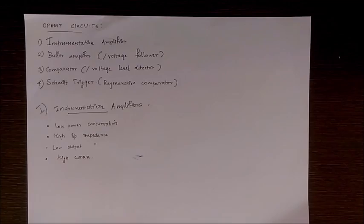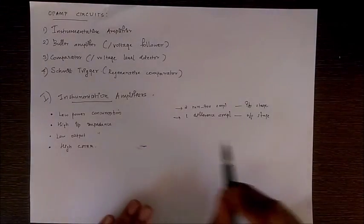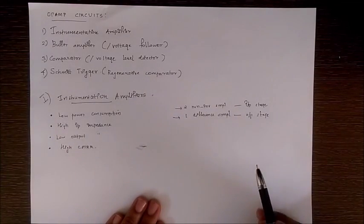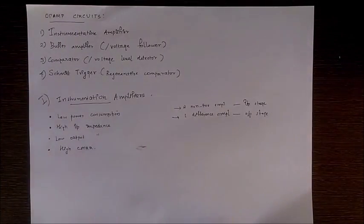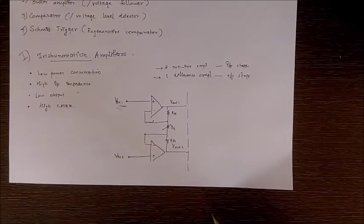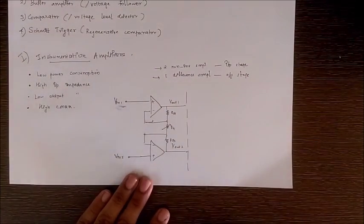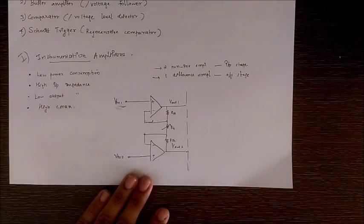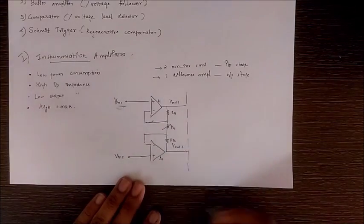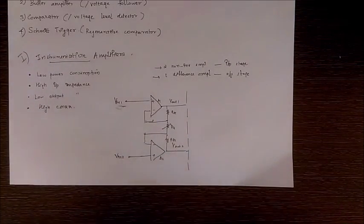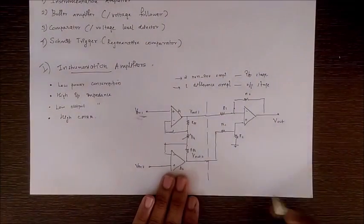Let's draw the circuit of an instrumentation amplifier. The circuit consists of two non-inverting amplifiers in the input stage and one difference amplifier in the output stage. The input stage has two non-inverting op-amps, A1 and A2. Now let's draw the output stage, which is a difference amplifier that we already studied in the last tutorial.